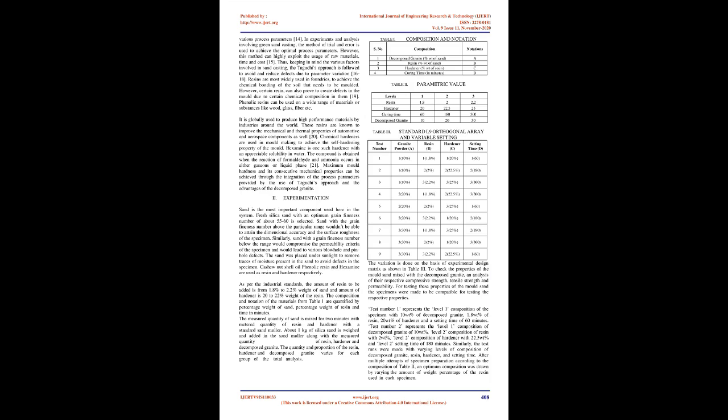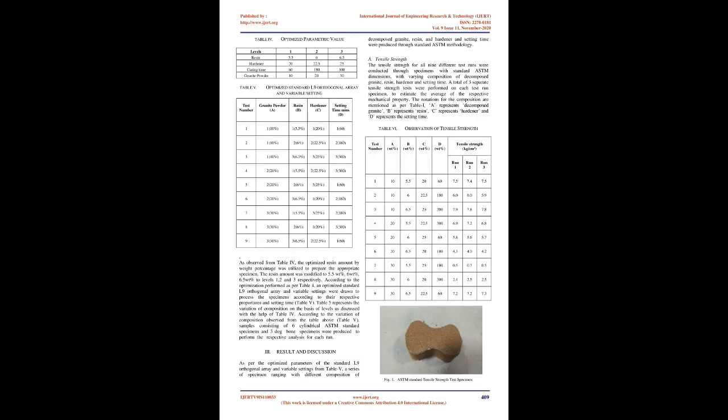Optimal parametric compositions of green sand properties were obtained through Taguchi's approach using the L18 orthogonal array. Thus, this approach provides a basic, systematic, and efficient way for the optimization of various process parameters. In experiments involving green sand casting, the method of trial and error is used to achieve the optimal process parameters. However, this method can highly exploit the usage of raw materials, time, and cost. Thus, keeping in mind the various factors involved in sand casting, the Taguchi approach is followed to avoid and reduce defects due to parameter variation.